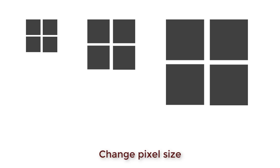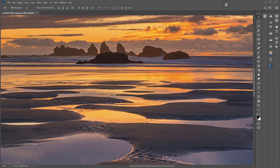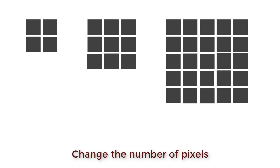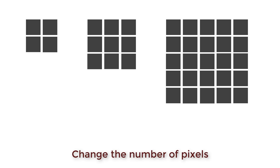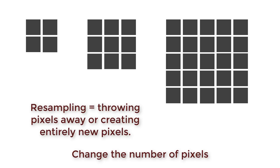The first way is to leave the number of pixels the same but make those pixels larger or smaller by changing the pixel per inch setting. If 72 pixels fit in an inch, the pixels would be much larger than if you could fit 300 in an inch. But if the pixels get too big, we can clearly see them — something we call pixelation. Around 150 pixels per inch is where we begin to see the pixels up close. The other way to change image size is to leave the pixels the size they are and increase or decrease the total number of pixels. Fewer pixels makes a smaller image and more pixels makes a larger image. This requires what Photoshop calls resampling — it sizes the image by either throwing pixels away or creating entirely new pixels.